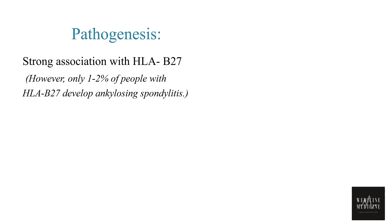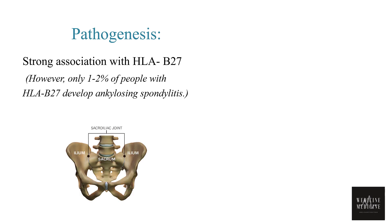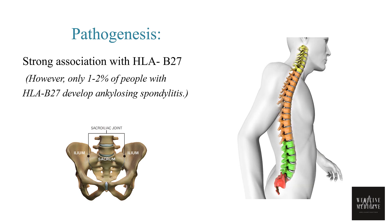Regarding pathogenesis, more than 85% of patients with ankylosing spondylitis are HLA B27 positive; however, only 1 to 2 percent of people with HLA B27 actually develop ankylosing spondylitis. The sacroiliac joints are usually the first to get involved, followed by the spine from the lumbar region upwards. The hip, knee, and manubriosternal joints are also frequently involved.